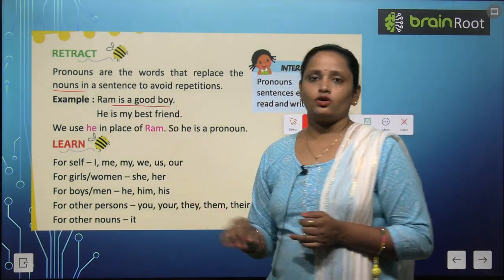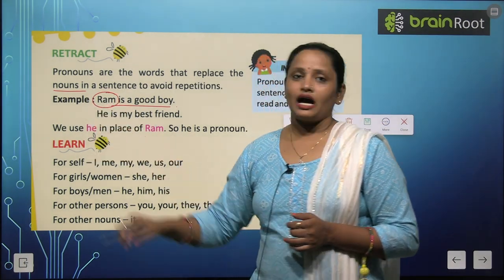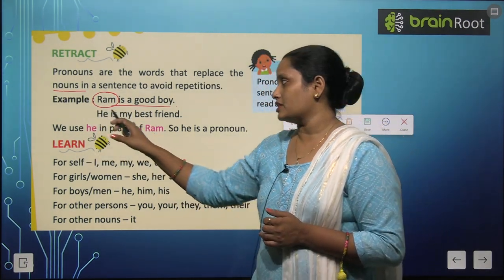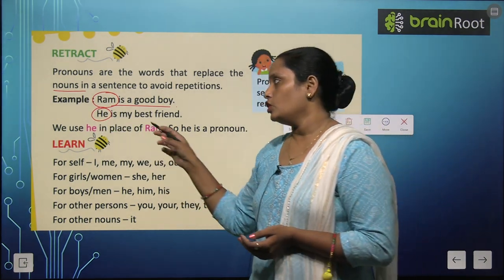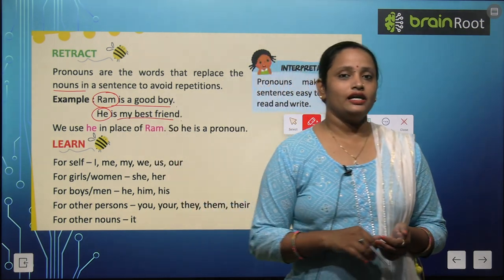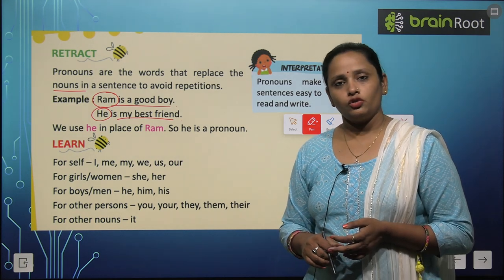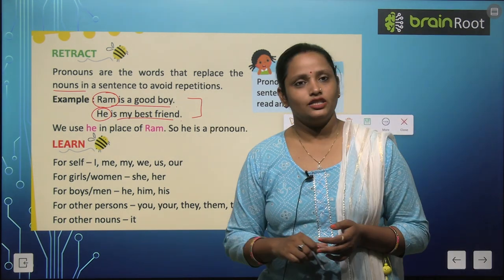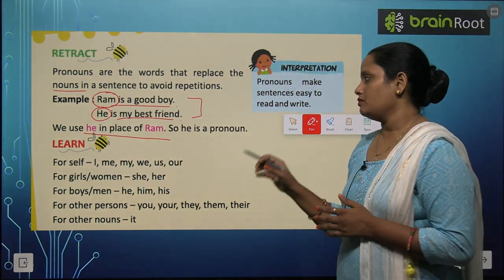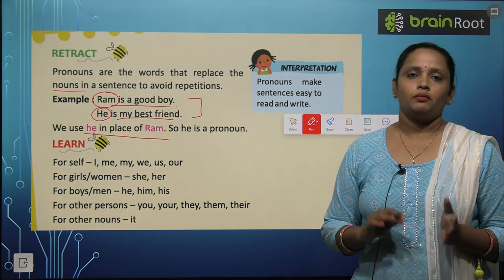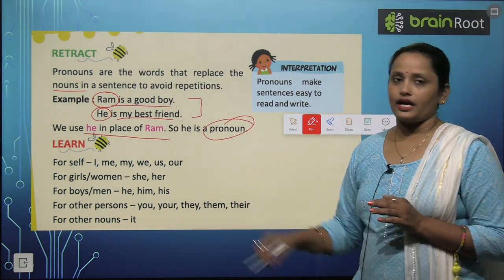What is the example? Ram is a good boy. Ram is a good boy. Now instead of writing Ram again and again, it's better if I write 'he' in place of Ram. He means Ram, and Ram means Ram. So the sentence becomes: He is my best friend. If you are asked who is 'he', you would say Ram. So we used both these sentences for Ram. We use 'he' in place of Ram, so 'he' is a pronoun. We used 'he' in place of Ram, so 'he' is called a pronoun.